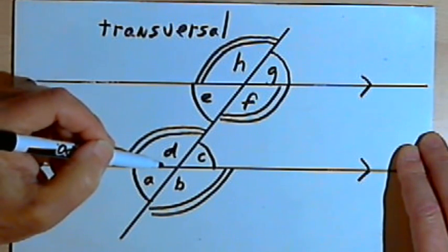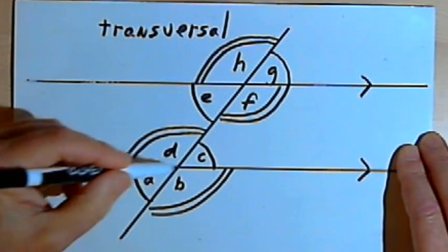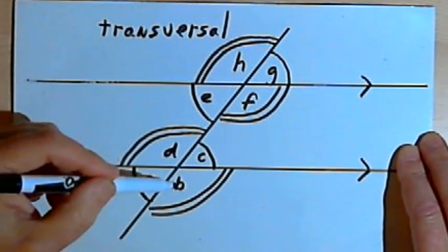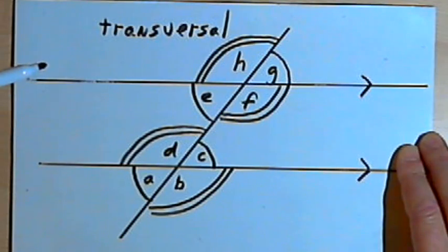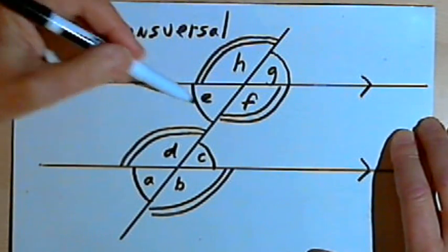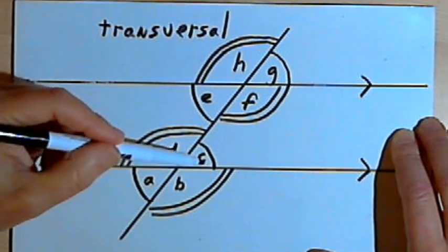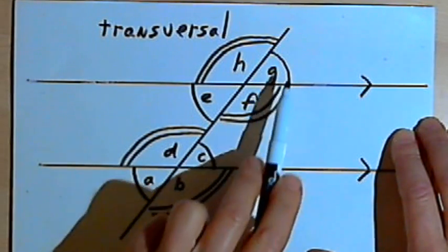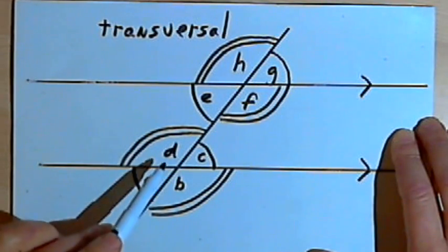For these eight angles, there are really only two different measures. Angles A, C, E, and G are all equal to each other, and angles B, D, F, and H are all equal to each other. To recap the names: corresponding angles are angles that have the same corresponding position on the two parallel lines — like C and G, or D and H.